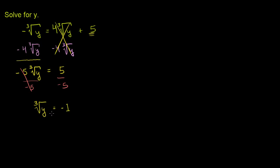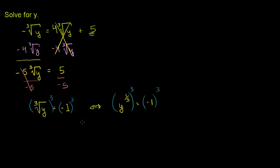The cube root of y is equal to negative 1. The easiest way to solve this is to take both sides of this equation to the third power. This statement is the exact same as saying y to the 1/3 is equal to negative 1 — just two different ways of writing the same thing. So if we take both sides to the third power, y to the 1/3 raised to the third power is like y to the (1/3 × 3) power, or y to the first power.